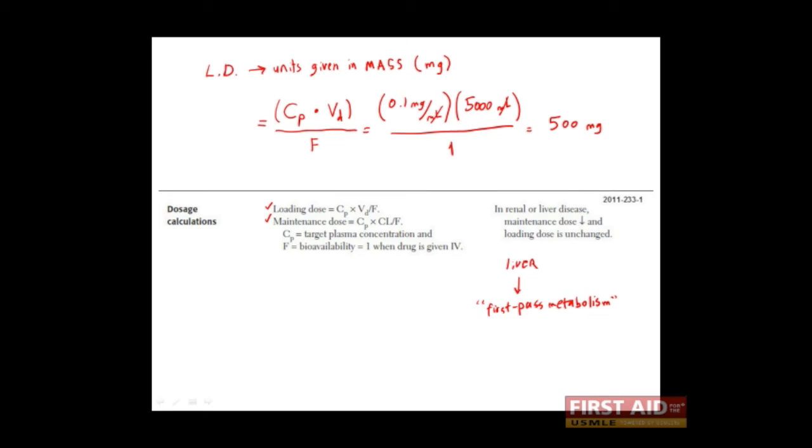Now of course, once we put a drug into the body, the body will begin metabolizing it. And thus we need to give more drug every so often to maintain our target concentration of 0.1 milligrams per milliliter. And this is where our maintenance dose comes in. The equation for maintenance dose is given by the target plasma concentration multiplied by the clearance of that drug divided by the bioavailability.